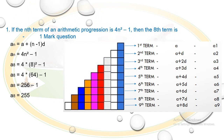The first question is worth one mark: if the nth term of an arithmetic progression is 4n² - 1, then what is the eighth term? They are asking for the eighth term, and the nth term formula is already defined as 4n² - 1.